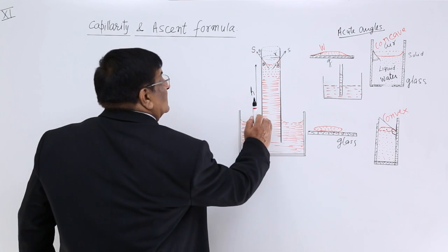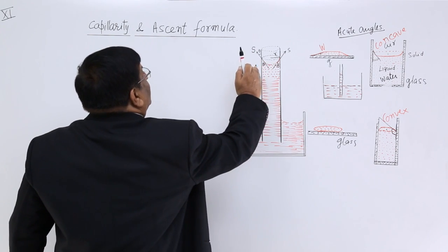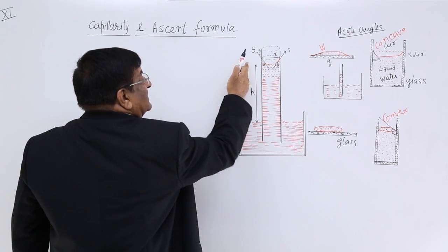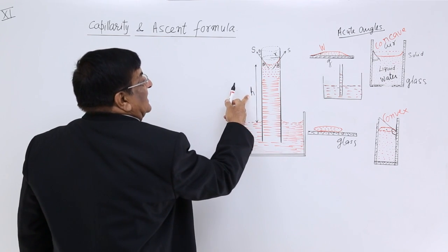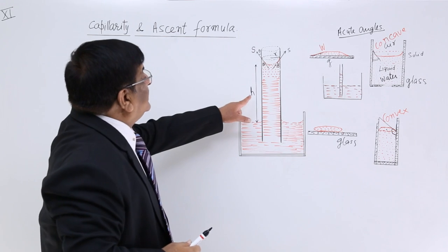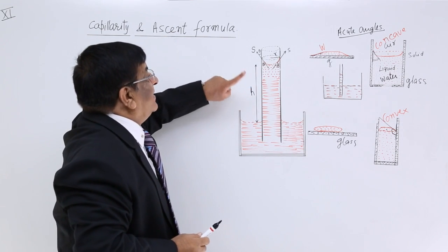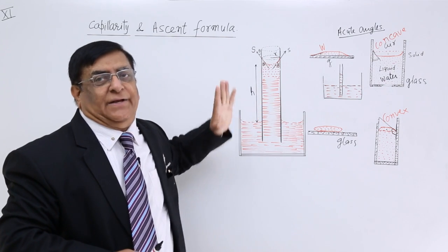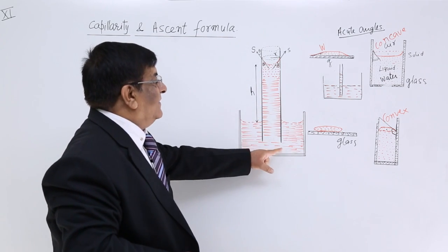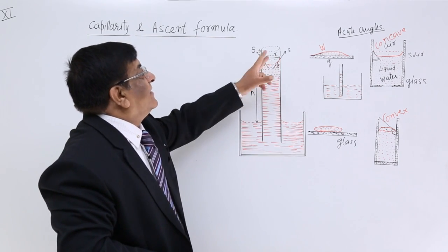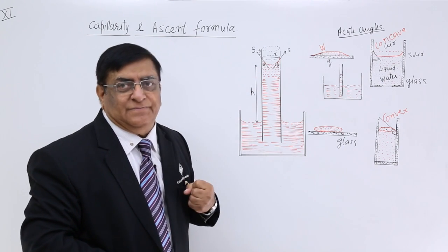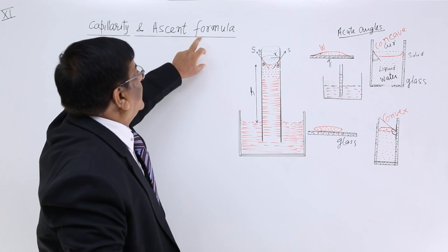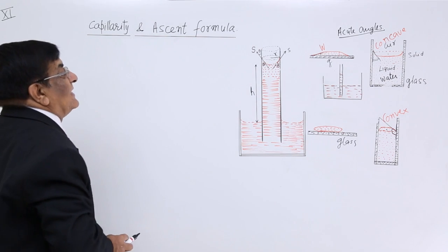The liquid has gone up — we call this ascent, and its magnitude is H. The question is: how does this ascent H depend upon surface tension and other quantities such as the radius of the capillary? We can find a formula for this, which is known as the ascent formula.